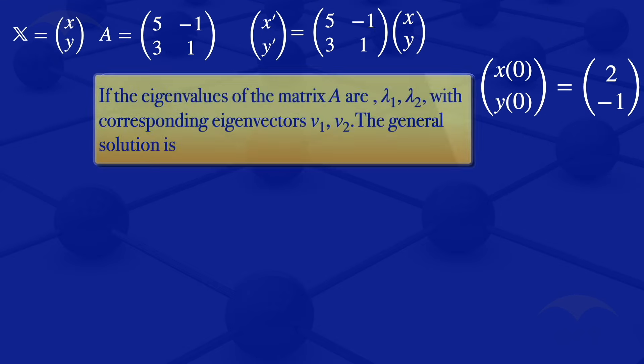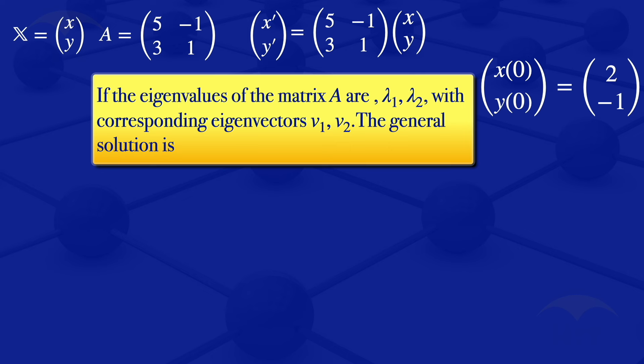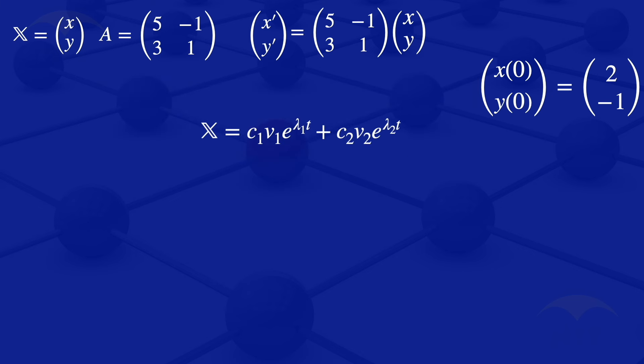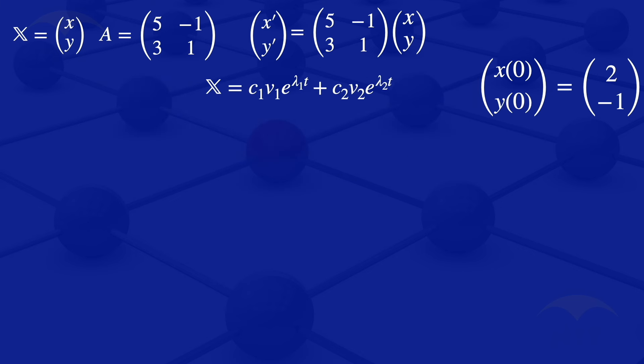If the eigenvalues of matrix A are lambda_1 and lambda_2 with corresponding eigenvectors V1 and V2, the general solution of the system of ODEs is x = C1 * V1 * e^(lambda_1 * t) + C2 * V2 * e^(lambda_2 * t). That's the general solution of the system of ODEs.